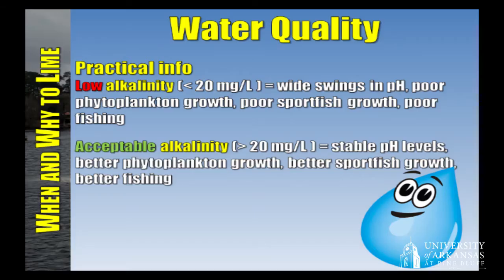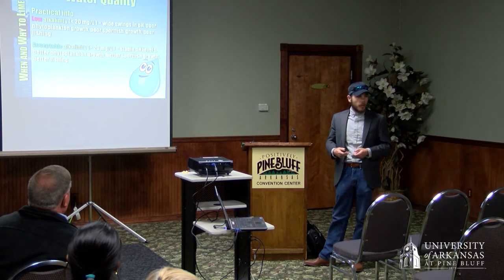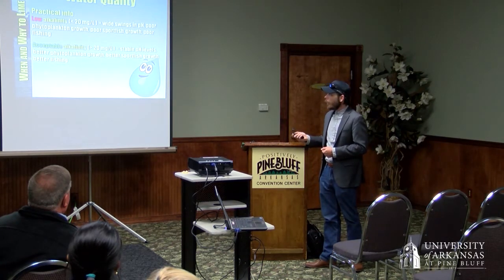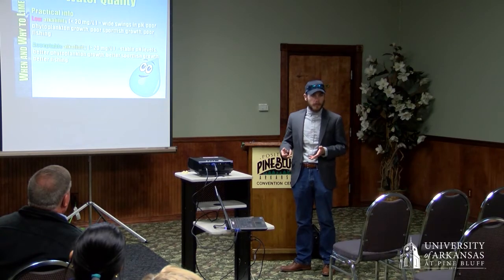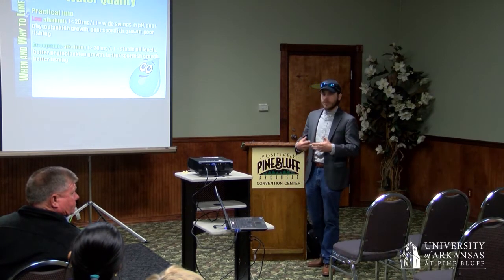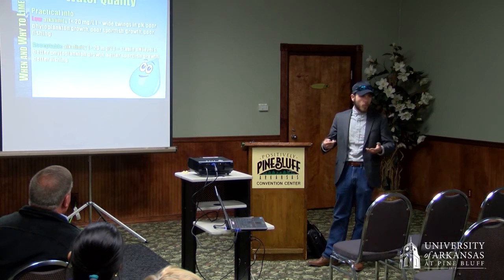We use a threshold of about 20 milligrams per liter of alkalinity as a baseline to shoot for. In most parts of central and southern Arkansas it's common to see alkalinity of five or six, or even two or three — basically no limestone in the geology. Ponds with alkalinity above 20 mg/L tend to be more productive, grow phytoplankton better, respond to fertilizers better, and sport fish grow better overall.